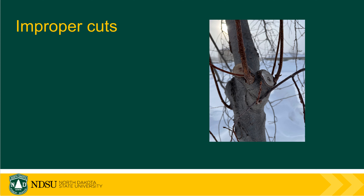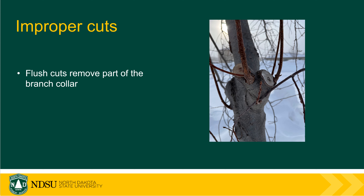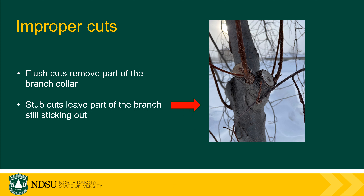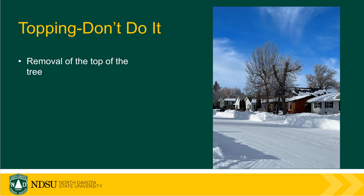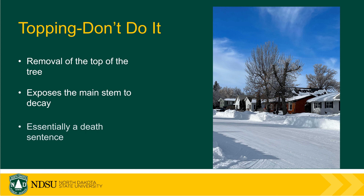Some examples of improper cuts are flush cuts and stub cuts. Flush cuts are where you go all the way back to the stem without retaining the branch collar. More often it's stub cuts, where you leave part sticking out — as you can see in this picture of the crab apple, there's actually decay already in the center of the stem that will work its way into the main trunk. Another type of cut you don't want to do is topping — removal of the top of the tree. When the tree gets to that size, the stems are so big it's really hard to close off and compartmentalize. Decay is essentially guaranteed and it is a death sentence for a tree.